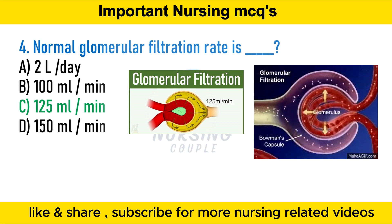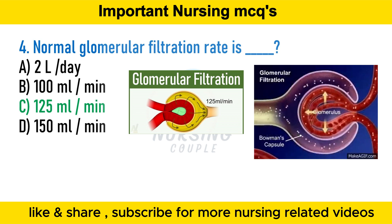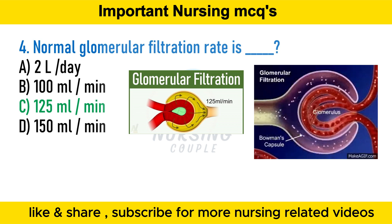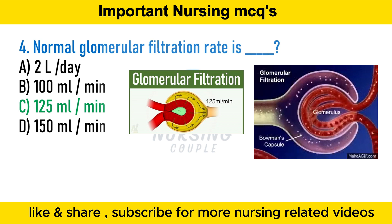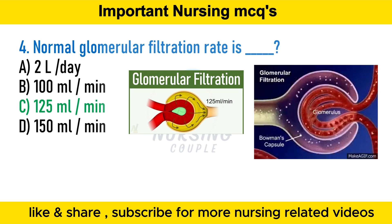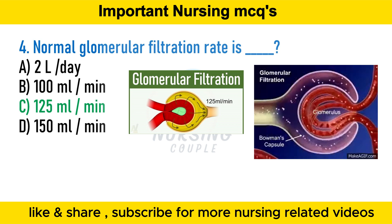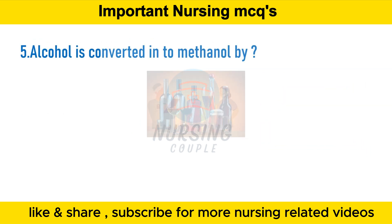Glomerular filtration is the process that the kidneys use to filter excess fluid and waste products out of the blood into the urine collecting tubules of the kidney, so they may be eliminated from the body. Glomerular filtration rate is the volume of fluid filtered from the renal glomerular capillaries into the Bowman's capsule per unit time. A major measure of kidney function is GFR; normal glomerular filtration rate is 125 ml per minute.